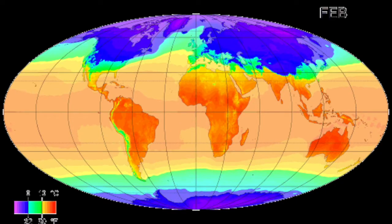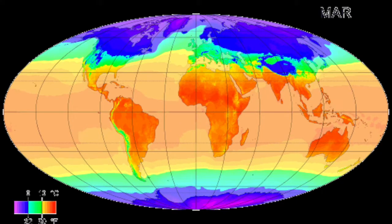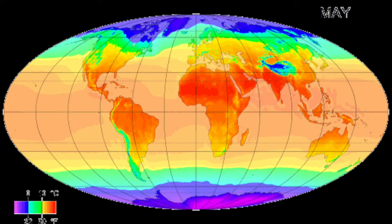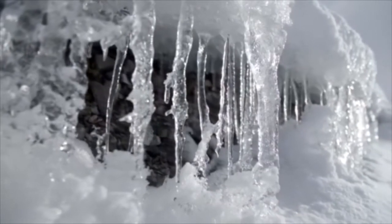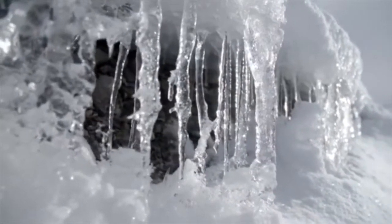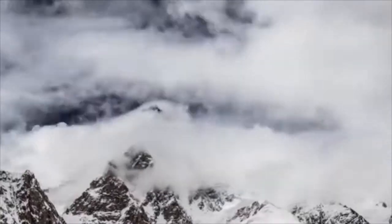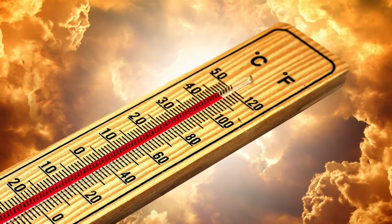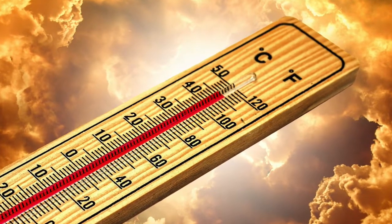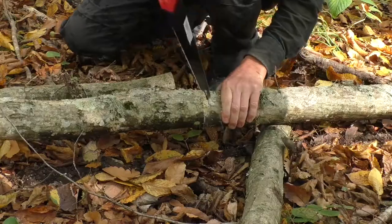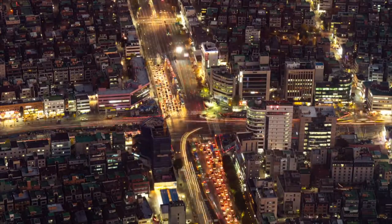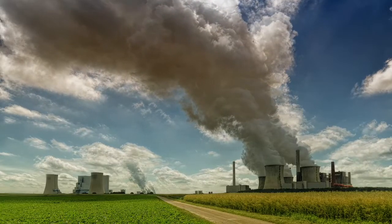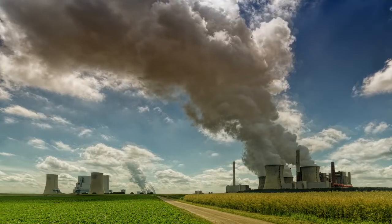Climate can change over long periods of time. Throughout its history, Earth has experienced several ice ages. During an ice age, temperatures are cooler than normal. Right now, Earth's climate is heating up. Climate is affected when we cut down forests, build cities, and burn fossil fuels to power our homes and cars.